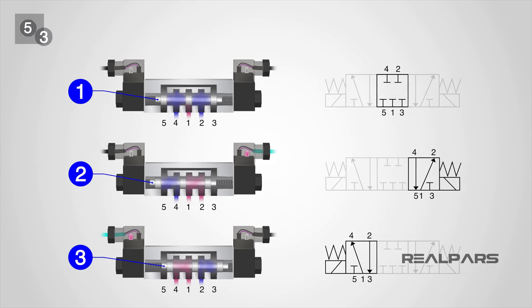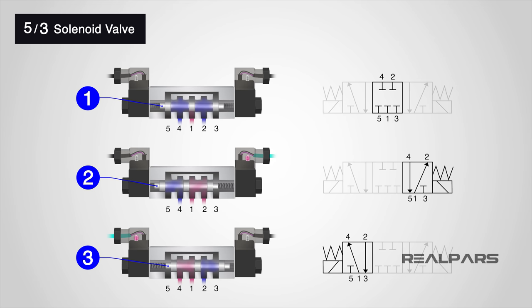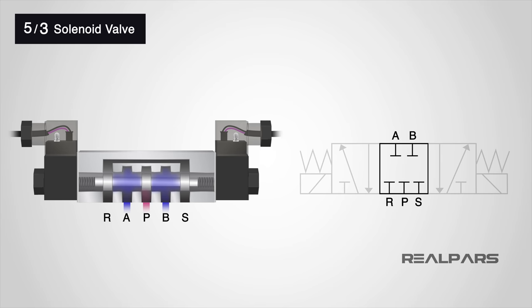So the valve will be called a five-by-three solenoid valve. You may also see some manufacturers use letters instead of numbers to identify the ports, but once you understand the schematic, it is easy to translate this.